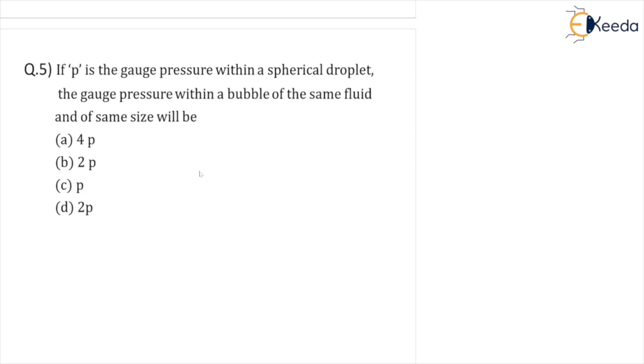So let me write down. What is given: a spherical droplet. In the spherical droplet, gauge pressure is given p gauge equals p. That means we write p equals 4 sigma upon d. We know that is the spherical droplet formula.